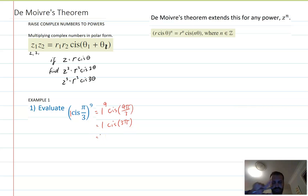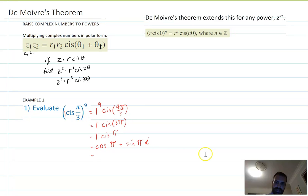We can move 3π around. So 3π is π, 2π, 3π. That means this is the same as 1 cis π. The question says evaluate. So hopefully that gives you a clue. We can expand this to be cos π plus sin π i. Cos π is negative 1 and sin π is 0. So 0 times i is 0. Our answer is negative 1.